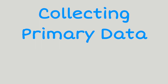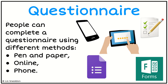So when we're collecting primary data, here's a few things we want to think about. One method we can use is doing a questionnaire. We can do a pen and paper method, an online method, or a phone method. Often with these ones we've got the questions all written out beforehand — we've checked the wording and the order of the questions — and often we'll use Microsoft Forms or Google Forms, which are quite common programs that students would use at school.